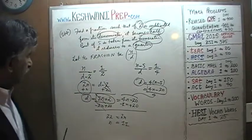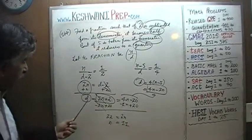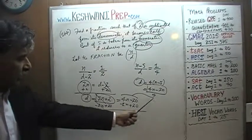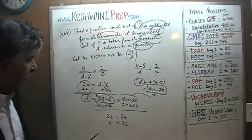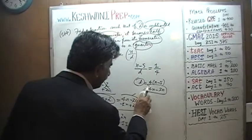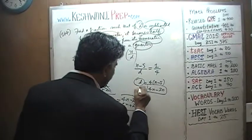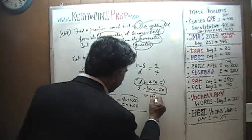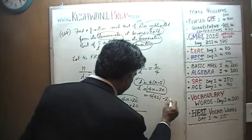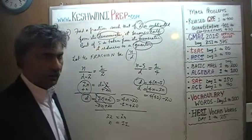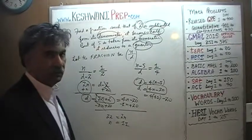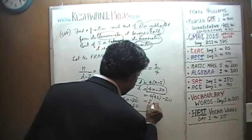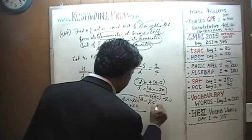So now we know the numerator of the fraction we're looking for is 11 — n equals 11. Now we have to figure out the denominator. We can use either equation; let's use this one. The denominator is 4 times n, which is 4 times 11, equals 44, minus 20, which gives us 24. The denominator is 24.